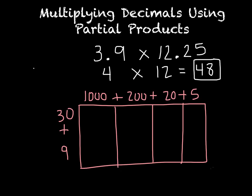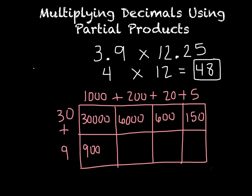Let's see. 30 times 1000 is 30,000. 30 times 200 is 6,000. 30 times 20 is 600. 30 times 5 is 150. Then we have 9,000, 1,800, 180, and 45.